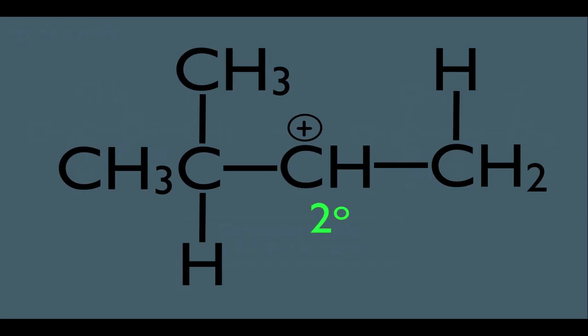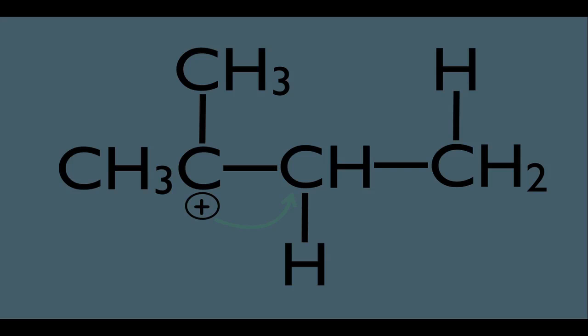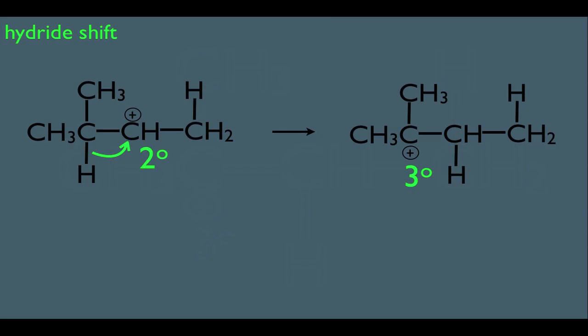Let's make sure we can visualize this move. Here's a close-up. We started with the secondary carbocation, and the arrow moves like this — remember, the arrow shows movement of electrons. The electrons in that bond are moving over, and the hydrogen is going along with them. We get a new carbocation because the carbon we shifted the hydrogen from now only has three bonds and no lone pairs, giving it a positive formal charge. The carbon the hydrogen shifted to now has four bonds and no lone pairs, giving it zero formal charge. And in doing this move, we generate a tertiary carbocation. So in organic chemistry, we are allowed to do a hydride shift.